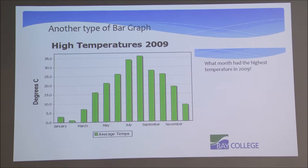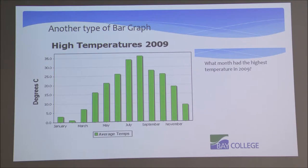The next graph we're going to look at is another type of bar graph. Instead of having the bars go from left to right in a horizontal fashion, sometimes we can illustrate different information using a bar graph where the bars are vertical. Here we have high temperatures for 2009 for any town USA, and these bars, just like in the previous graph, have different lengths.